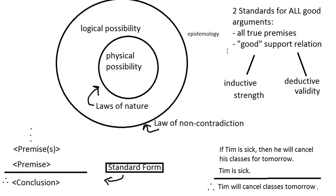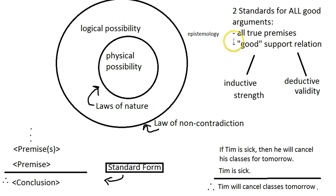Even in those kinds of disagreements, you might have noticed sometimes people say things like, 'look, even if all of your premises are true, I don't buy your argument.' Or 'I'm willing to grant for the sake of argument that what you're claiming is true, but I don't think that's enough to justify your conclusion.' If someone is speaking this way, they're challenging not the truth of the premises but the support relation.